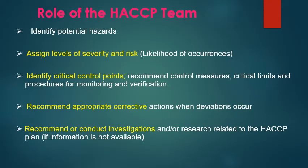One of the preliminary steps is to assemble the HACCP team, comprising members from different sections of the plant, including management and one member from outside. The role of the HACCP team is to identify potential hazards through hazard analysis, assign levels of severity and risk — that is the likelihood of occurrence — identify critical control points, recommend control measures, critical limits, monitoring and verification procedures, and recommend corrective actions when deviations occur. The team can also conduct investigations or research to generate necessary information if it is not already available.